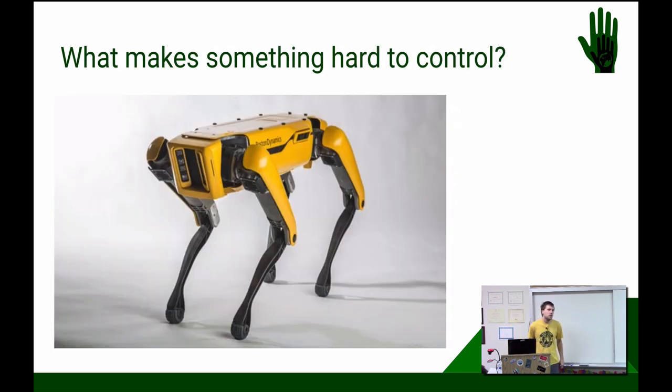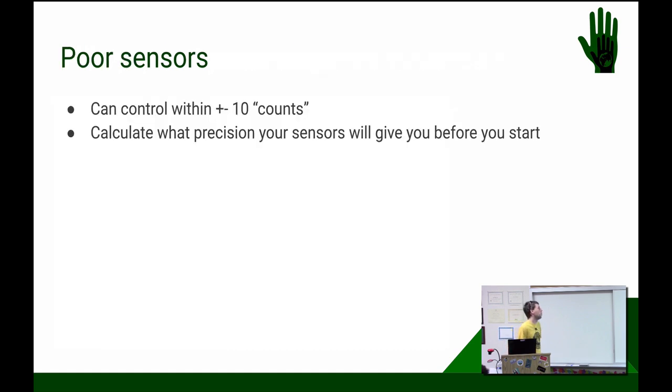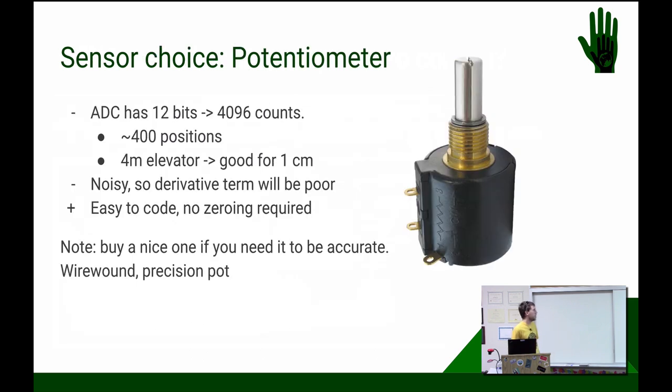So we've talked about some of the terms. Let's talk about what makes something hard. So I'm going to go over, and this is, we want to know what's hard so we can know when we're signing ourselves up for more work, and we can make a conscious decision there, and we can also change our design a little bit to make something easier to control. Okay, so with most sensors in FRC with reasonable controls, you can control within plus or minus about 10 units. So the unit depends on your sensor. So you're never going to be perfectly at your set point. So we need to design our sensors such that we can control things well. So we can calculate this. So let's pick a potentiometer here. So our analog digital converter on the RoboRio has 4096 counts. With our divide by 10, that's about 400 positions, which means if our elevator is going to move 4 meters, we can control to about 1 centimeter.